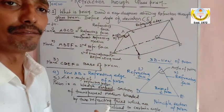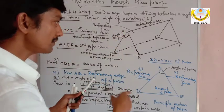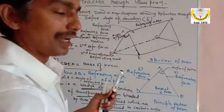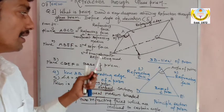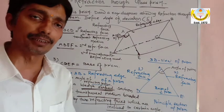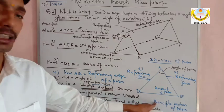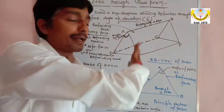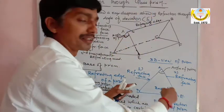When we draw the 3D view, we get five faces: ABCD (first refracting face), ABEF (second refracting face), CDEF (base face), AED (triangular front face), and BCF (triangular back face). So there are five faces in total. The principal section is obtained by cutting the prism in a plane perpendicular to the refracting edge, giving us the triangular cross-section.